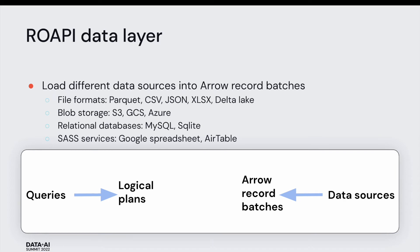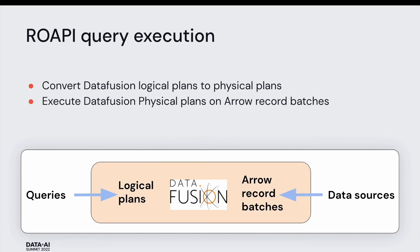On the other end, there's a data layer that can load data from different file formats like Parquet, CSV, JSON, Delta Lake tables, and from different storage systems like S3, GCS, and Azure — and even from relational databases like MySQL and SQLite, and SaaS services like Google Sheets and Airtable. The data layer understands these different formats and protocols and converts all of them into a single unified abstraction: Apache Arrow record batches, which are Arrow in-memory data structures. The execution engine component ties these two abstractions together — converting DataFusion logical plans into physical plans, applying them on Arrow record batches, and producing output.